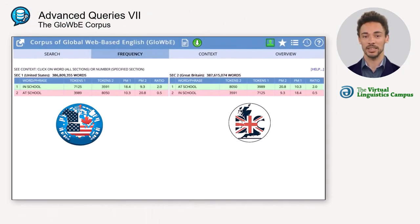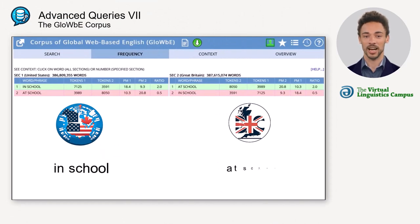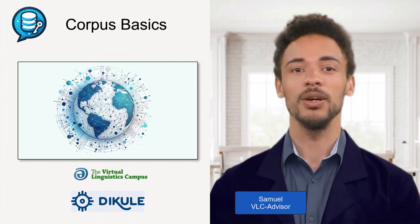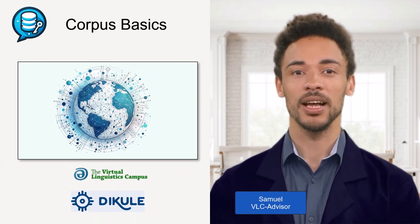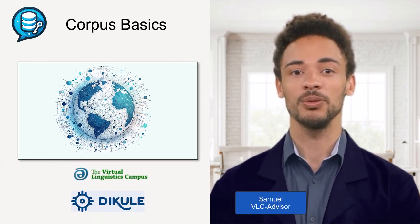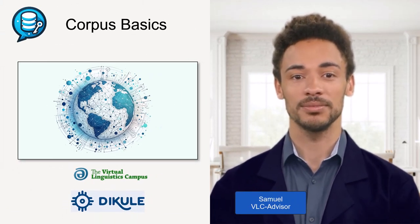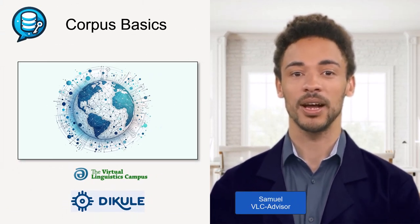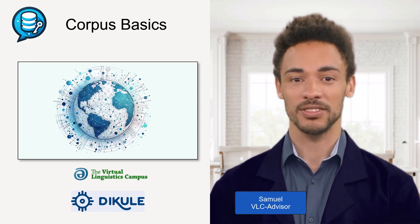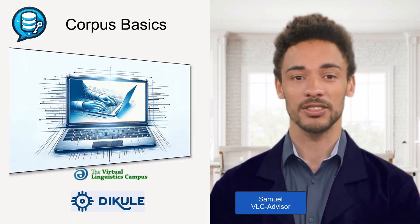In the GloWbE we can now immediately see that American English prefers 'in school,' whereas in British English 'at school' is used more often. So much for the GloWbE — an interesting tool, isn't it? Thanks for your attention.